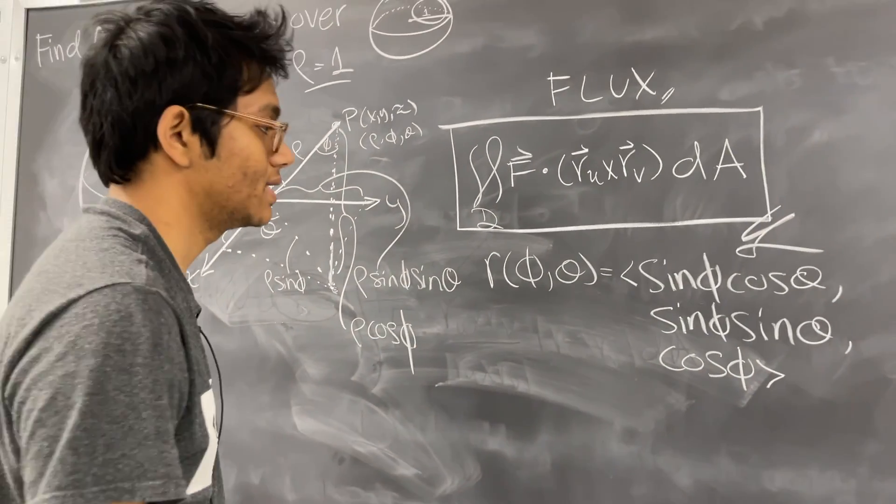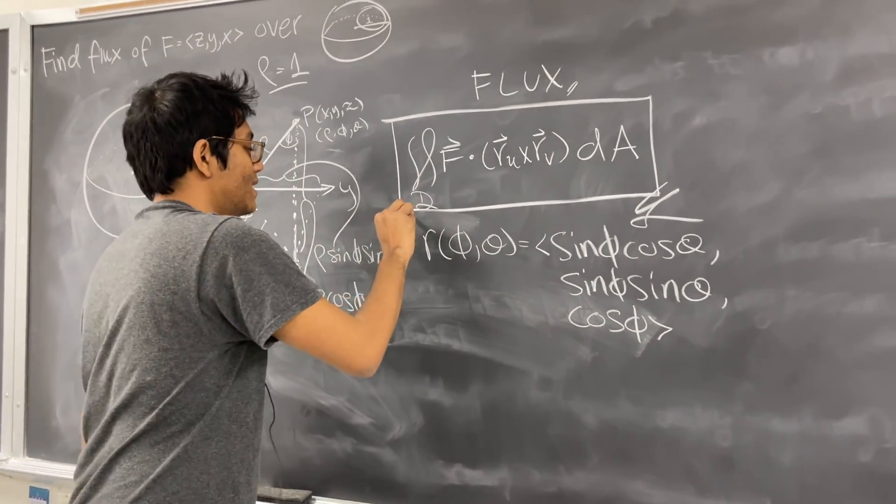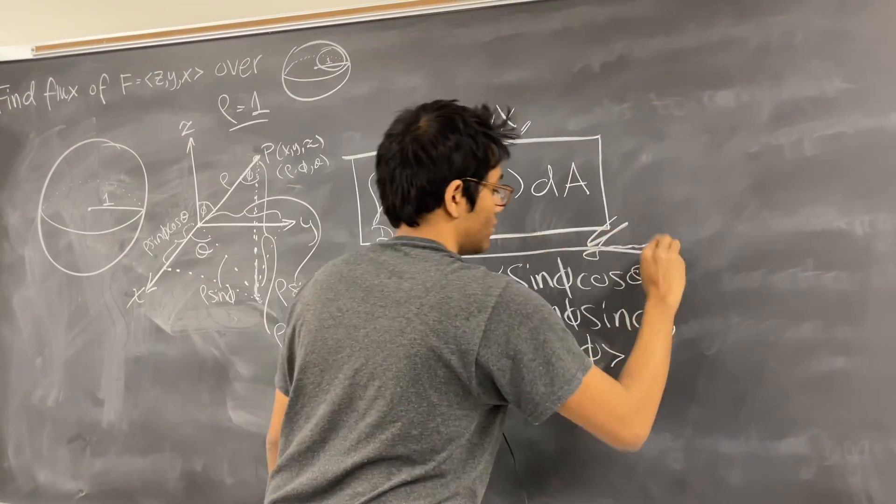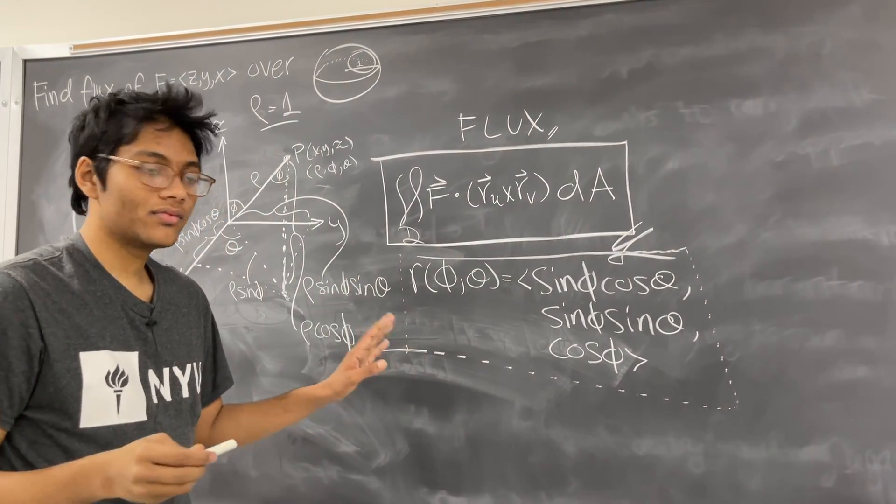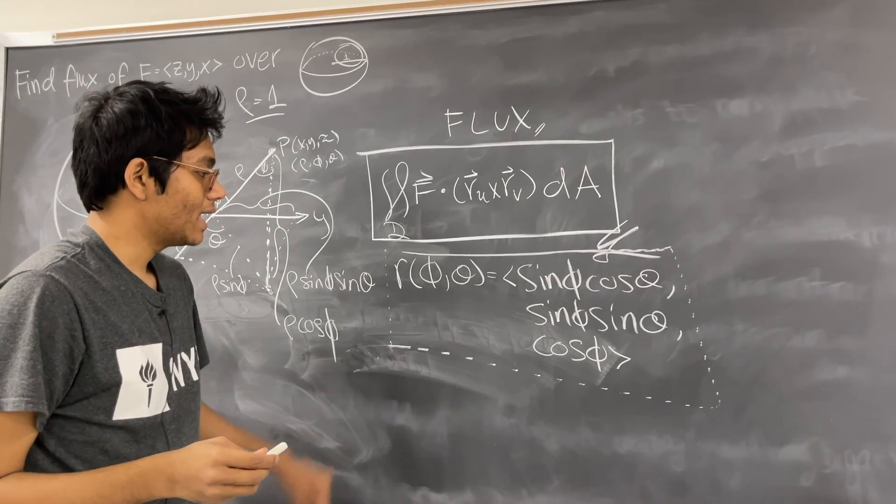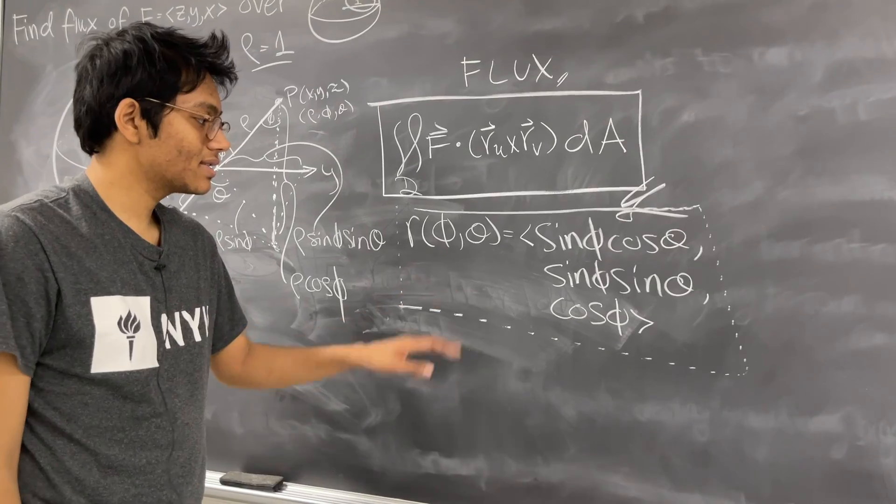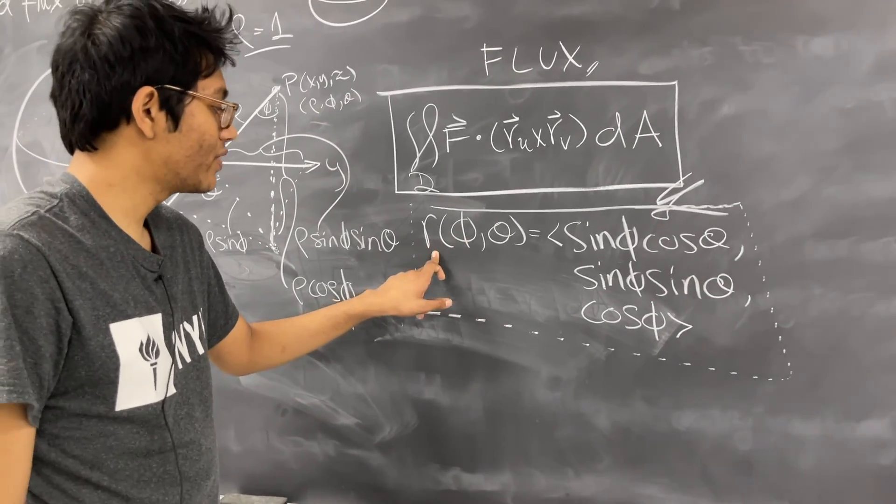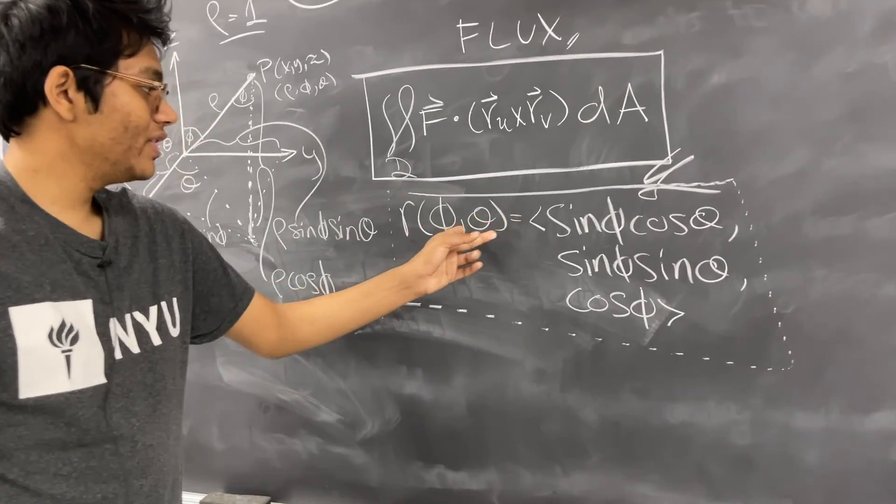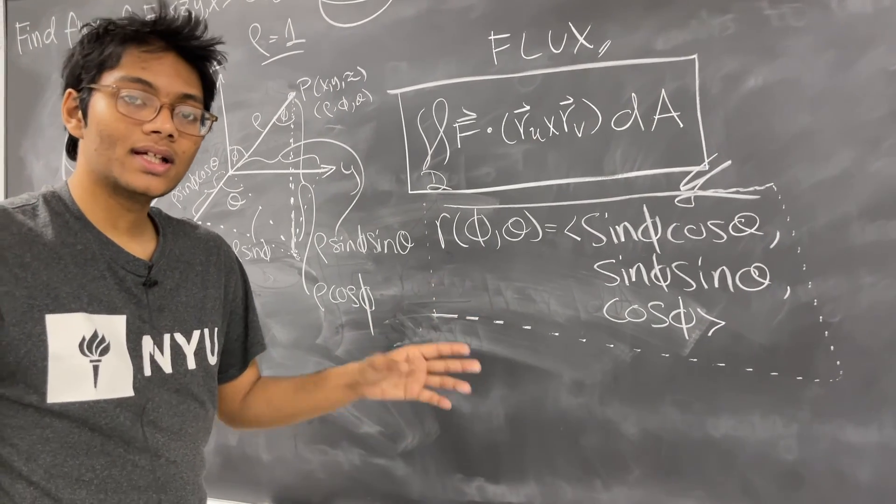So here's your parametrization. This parametrization we're going to really hold closely because in the next lecture, we're going to differentiate this. We're going to find the partial derivative of R with respect to phi and then with respect to theta, take the cross product.